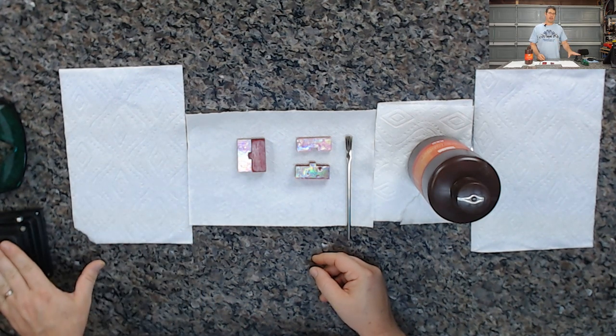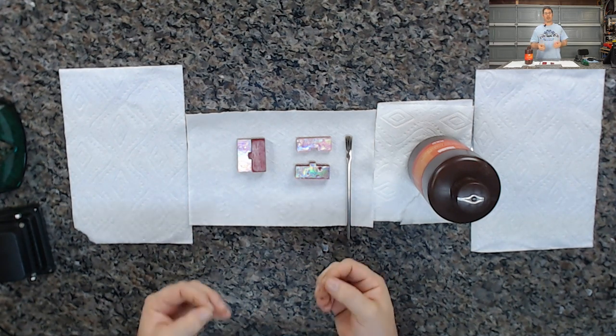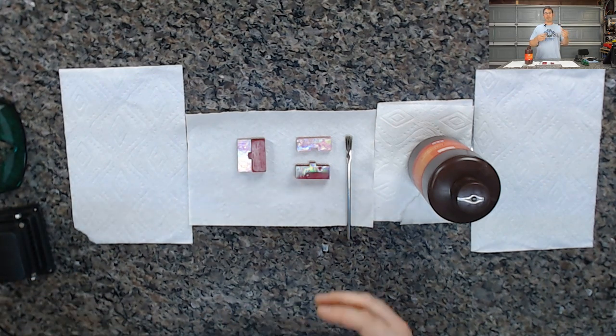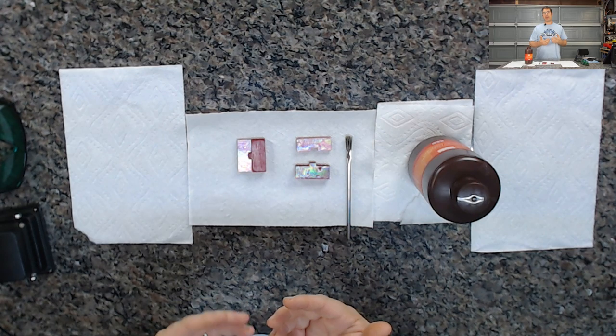Now you don't have to have something like a UV cannon. If you have a Prusa CW1 or something like that, you can use that to cure your part. You just have to fit it inside the unit. Or you could even use like a UV pen light.